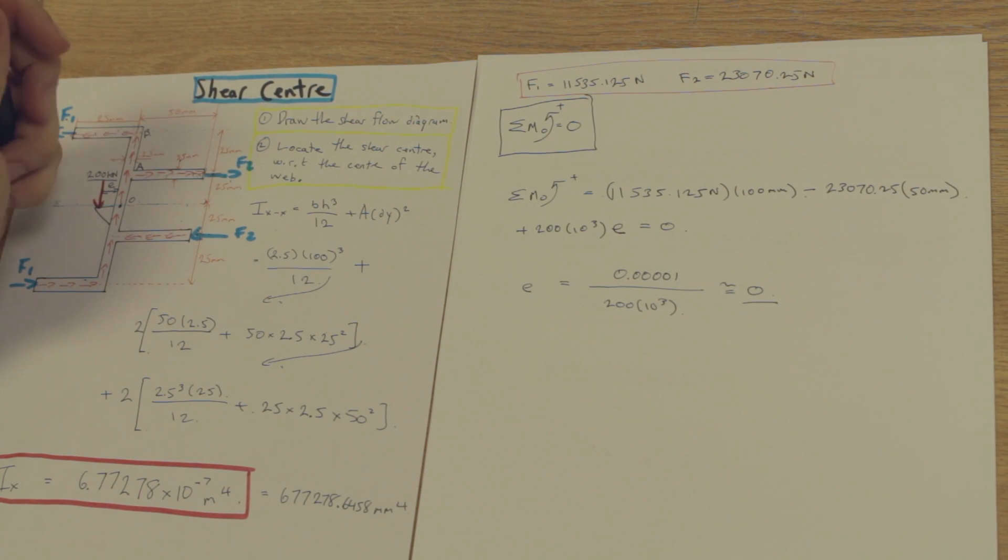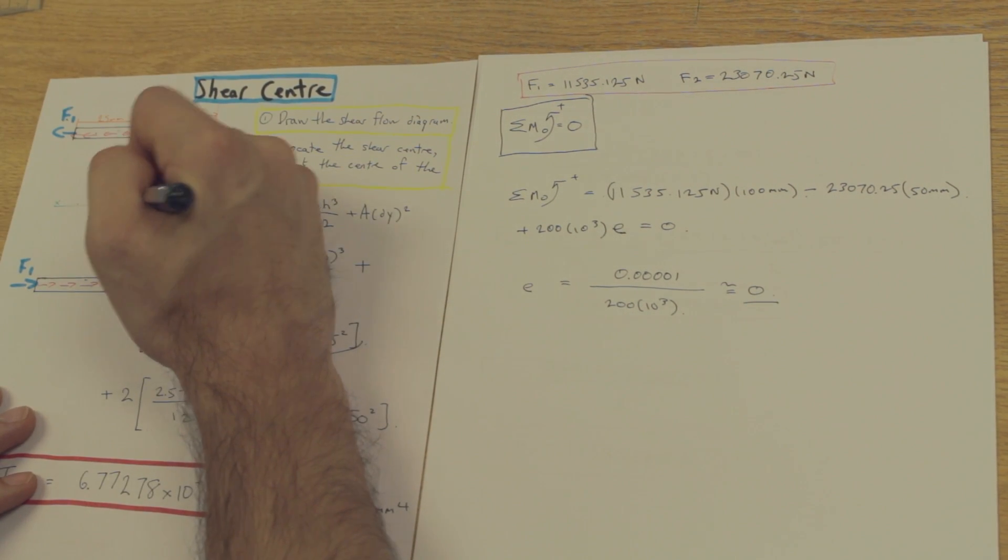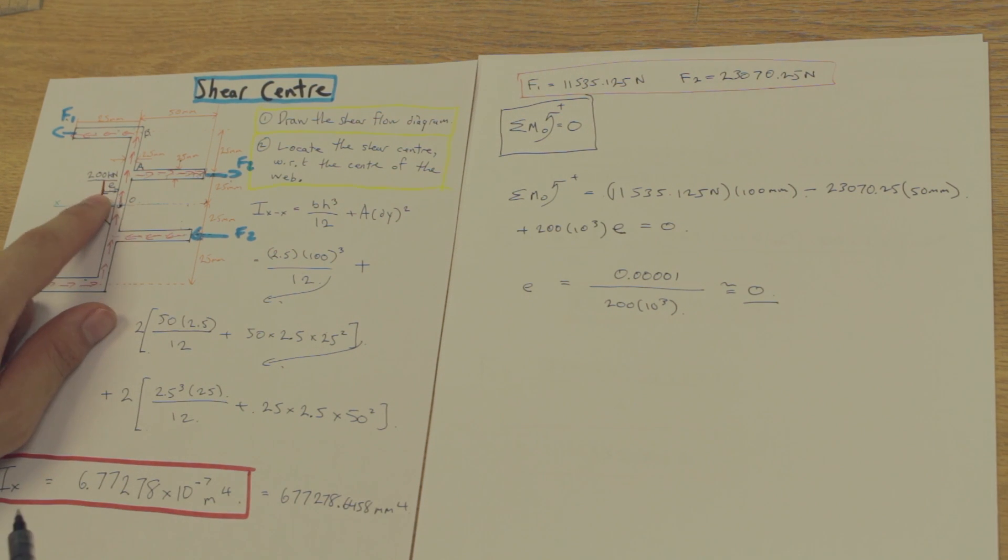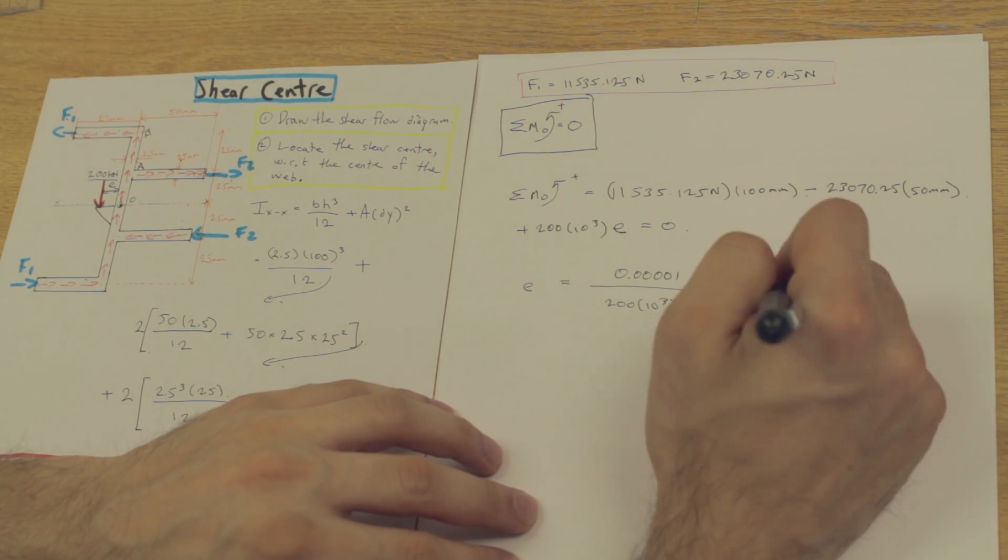So the shear is being applied essentially at the origin right here. So that means that the distance from the origin to where the shear force is being applied is essentially zero, and it's being applied pretty much directly on the origin at the center of the cross-section. That's what this value means here.